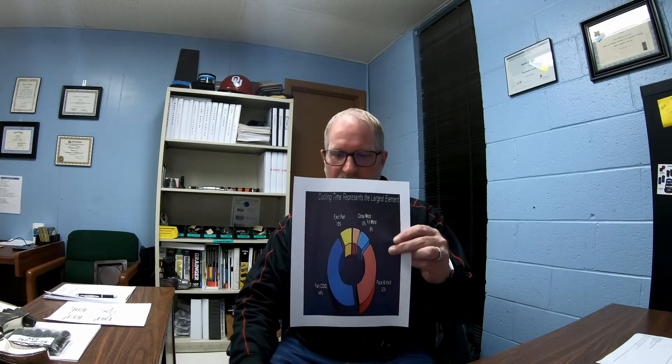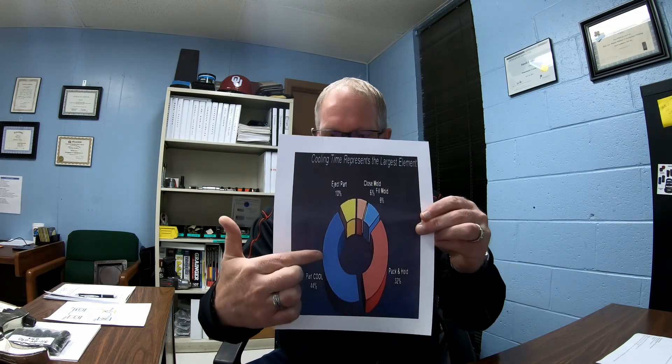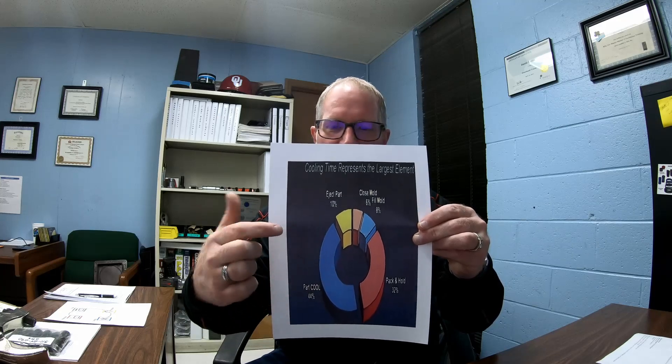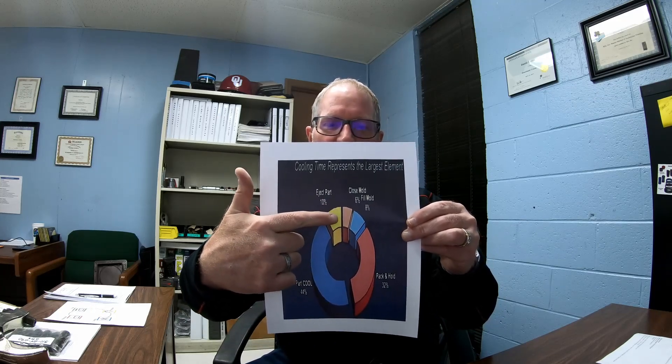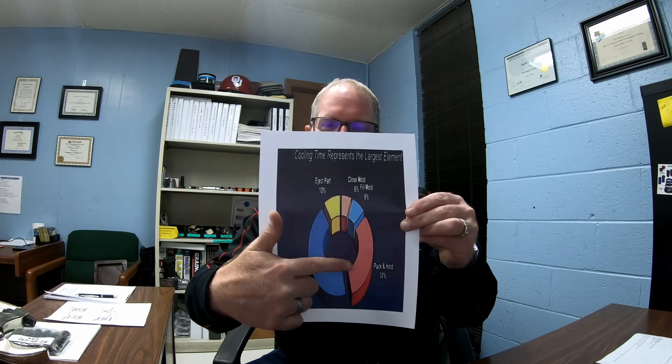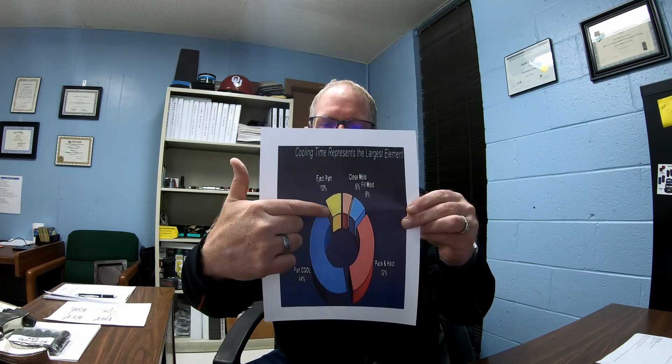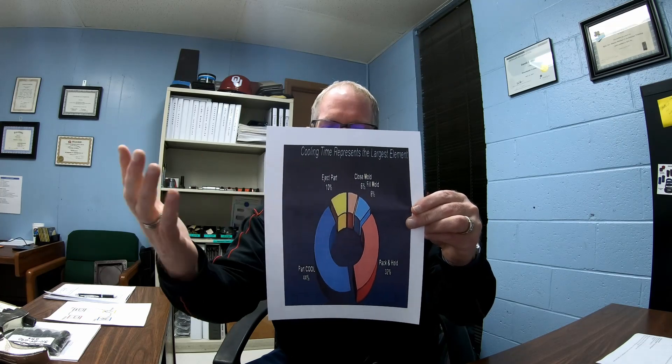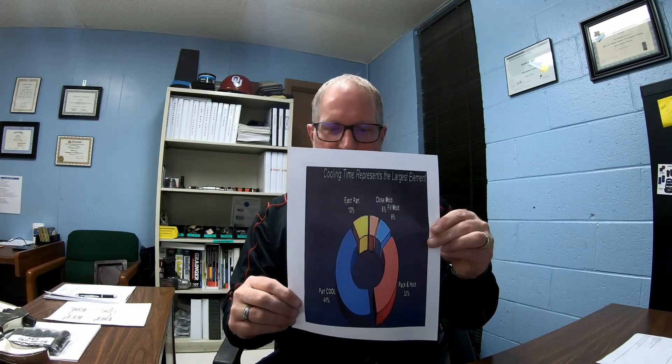Here's another illustration — a pie graph showing that cooling time takes up almost the entire cycle. You can see ejector, clamp open and close, fill, pack and hold, and then cooling rate occupying the majority of the cycle. This graph reflects almost every job run in the industry — cooling is the biggest factor in your overall cycle time.